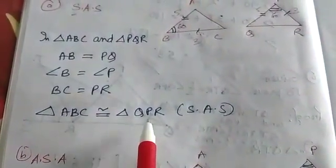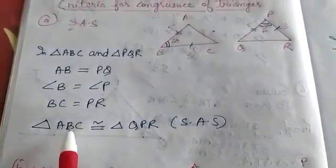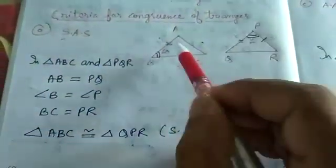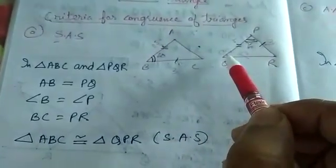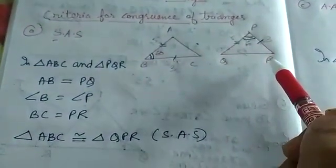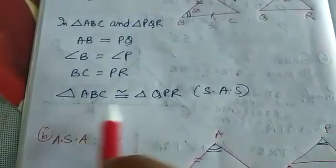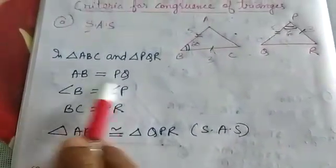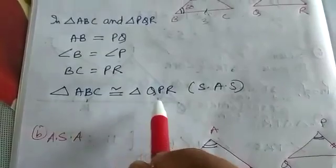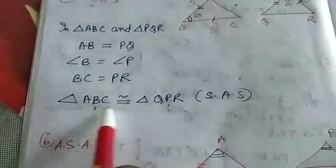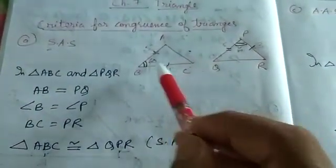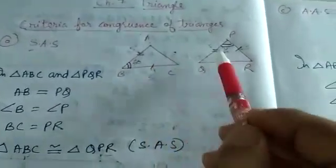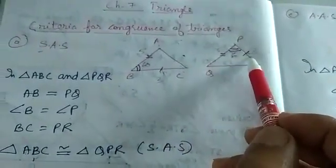The process of writing the congruency is very important. I have taken triangle ABC with double marking, angle, single marking, double marking, angle, single marking. The matching order means ABC is congruent to QPR — not PQR. B is in the center, so Q is also in the center; the last sides BC and PR match.